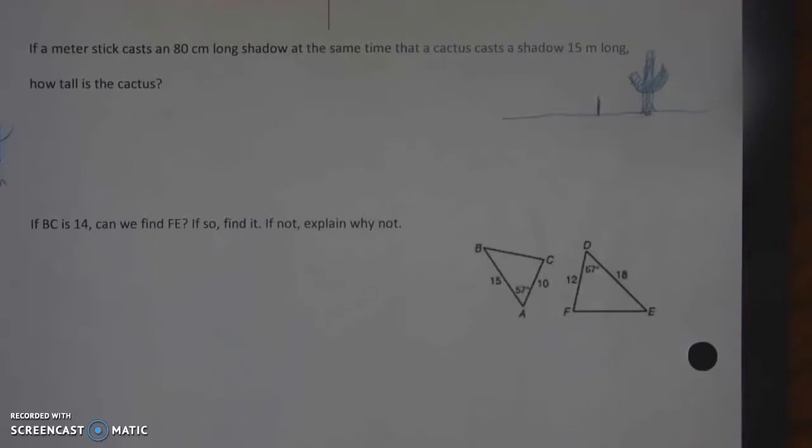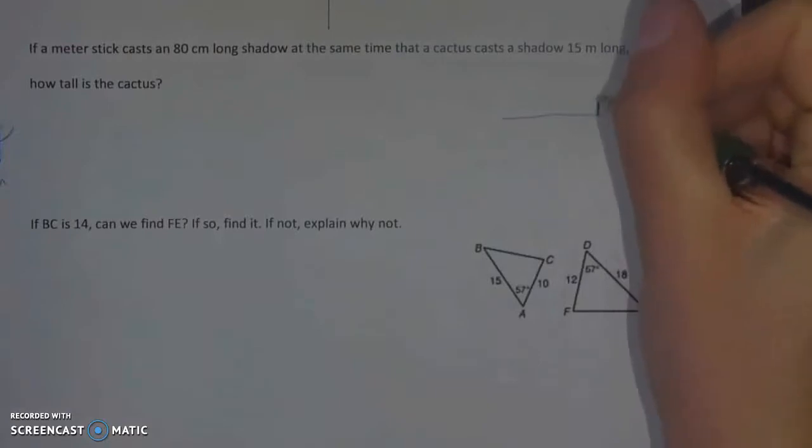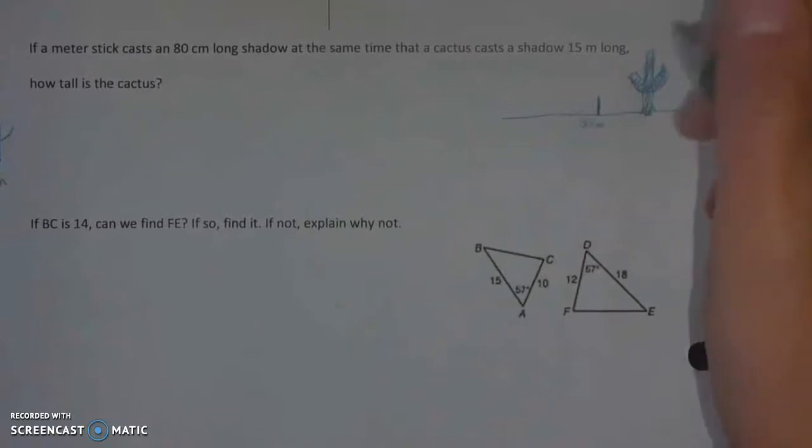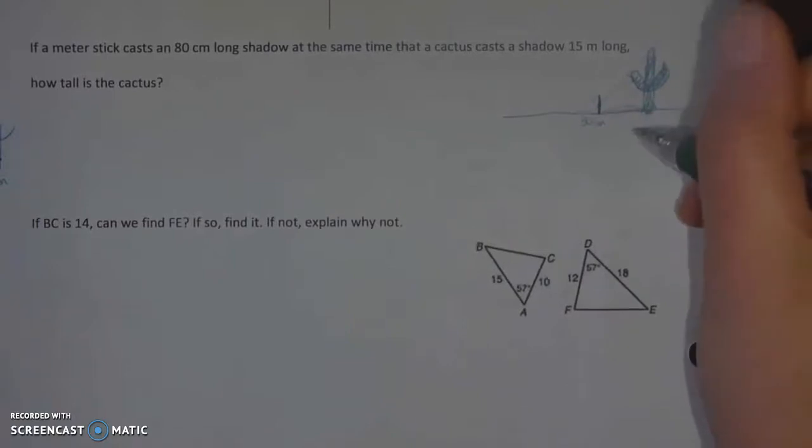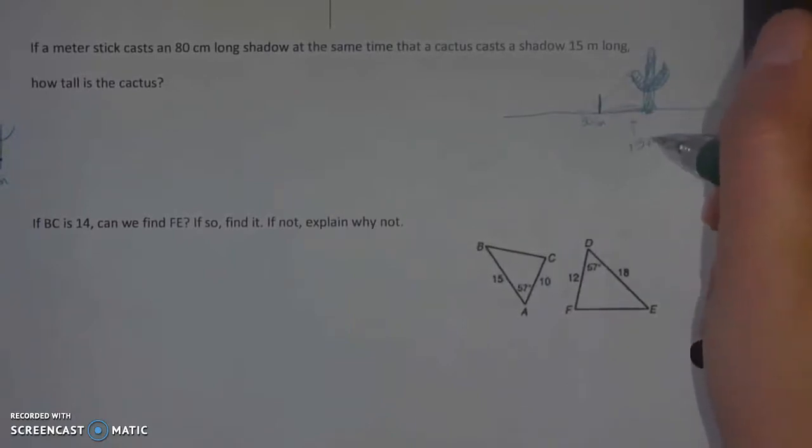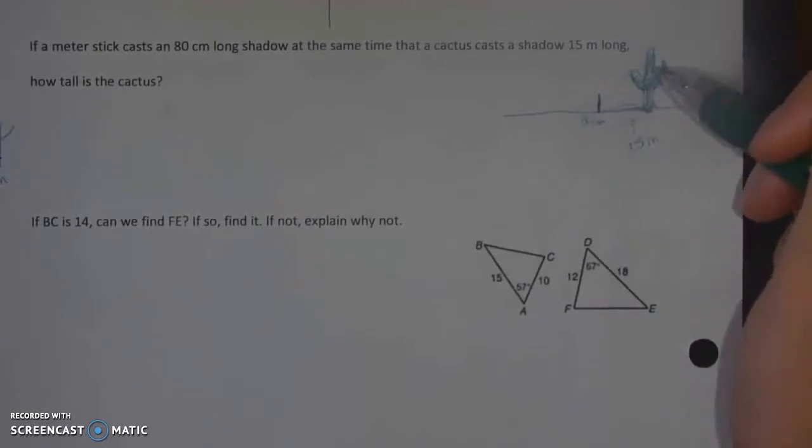There is some information that you need to know, though, and that is the exact time of day. We'll see why that's going to matter. What we know is that a meter stick casts an 80-centimeter-long shadow at this time in the desert. So you stuck it in the ground, you notice that this is 80 centimeters long. And at the same time, you have this cactus that you really want to know the height of. And its shadow is 15 meters. Notice meters, not centimeters. And you want to know how tall the cactus is.